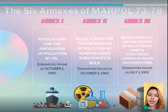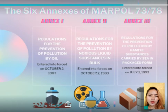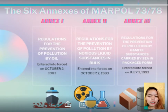Next are the six annexes of MARPOL 73/78. Annex 1 covers the regulations for the prevention of pollution by oil. It entered into force on October 2, 1983, and covers prevention of pollution by oil from operational measures as well as from accidental discharge.